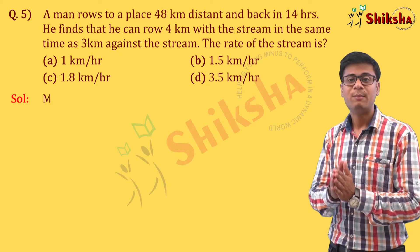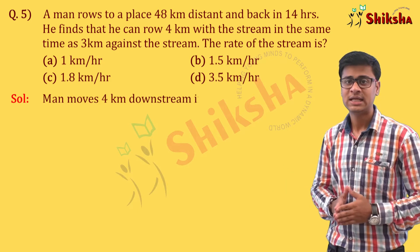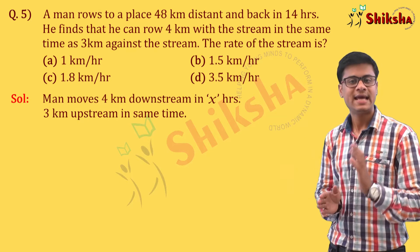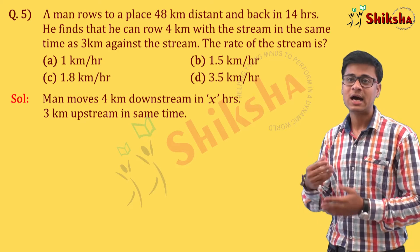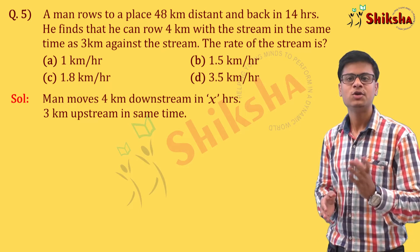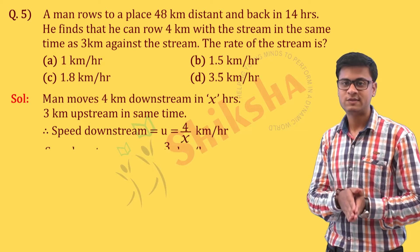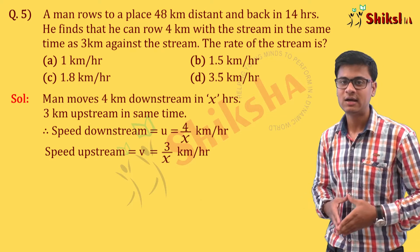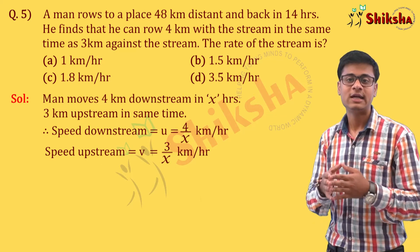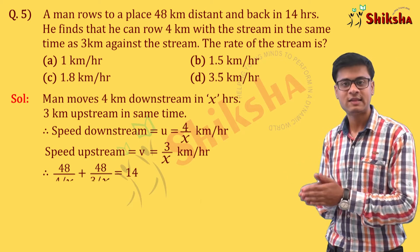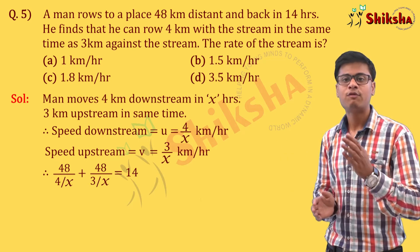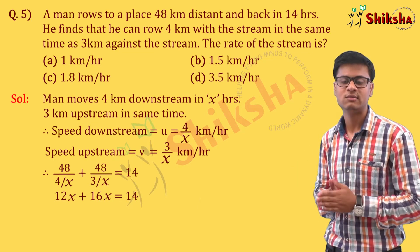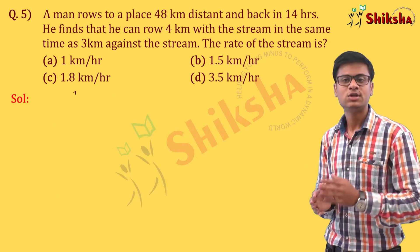Suppose the man moves 4 km downstream in x hours and 3 km upstream in the same time. Our equation using the given distance of 48 km becomes: 48/(4/x) + 48/(3/x) = 14. This gives 12x + 16x = 14, so 28x = 14, therefore x = 1/2.